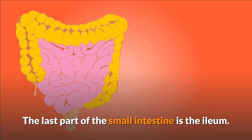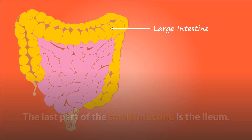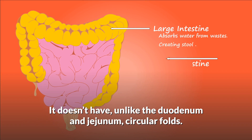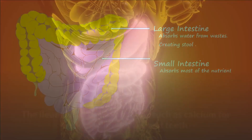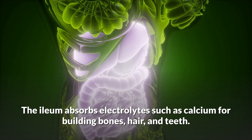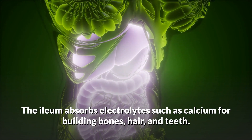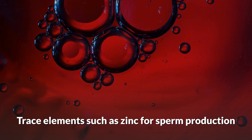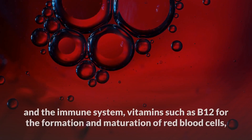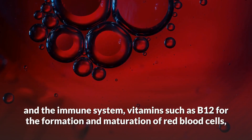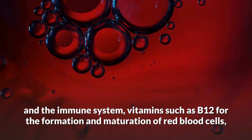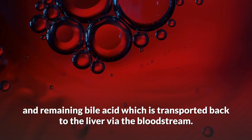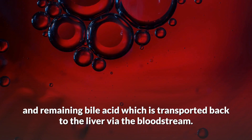The last part of the small intestine is the ileum. Unlike the duodenum and jejunum, it does not have circular folds. The ileum absorbs electrolytes such as calcium for building bones, hair, and teeth; trace elements such as zinc for sperm production and the immune system; vitamins such as B12 for the formation and maturation of red blood cells; and remaining bile acid, which is transported back to the liver via the bloodstream.